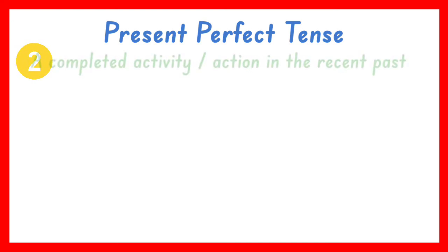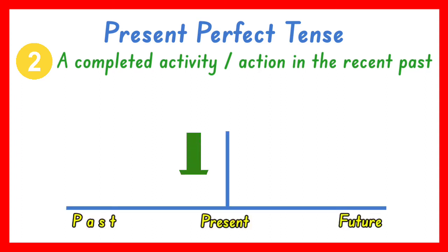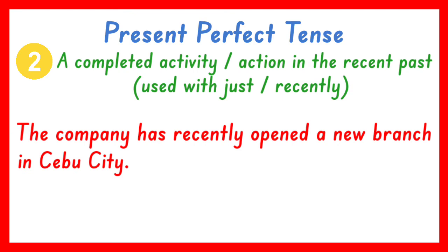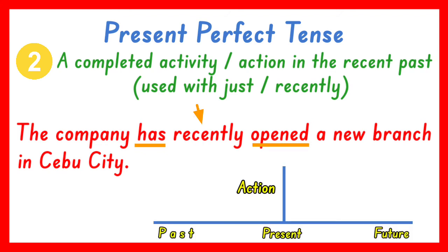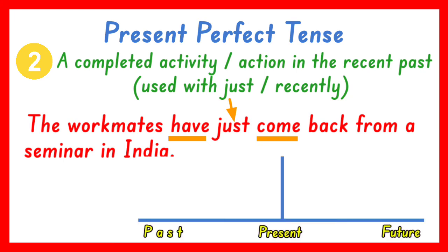The present perfect tense of the verb is also used to talk about a completed action in the very recent past. We can use the words just or recently to emphasize it. For example: The company has recently opened a new branch in Cebu City. The verb in the present perfect tense is has opened; recently indicates that the action has been completed in the recent past. Another example: The workmates have just come back from a seminar in India. The verb is have come; just is used to point out that the action or the return has just happened.